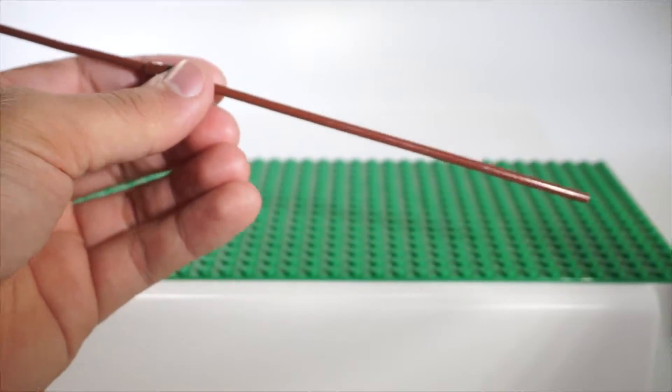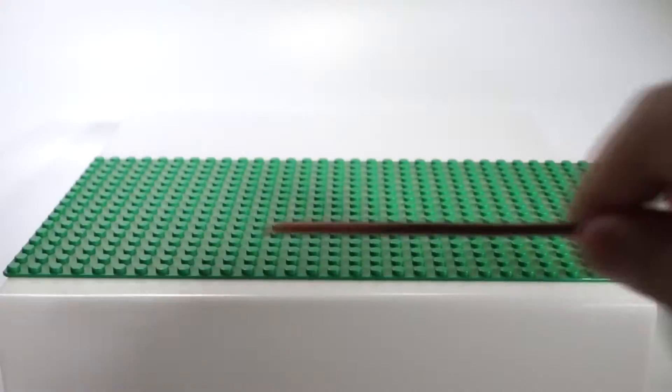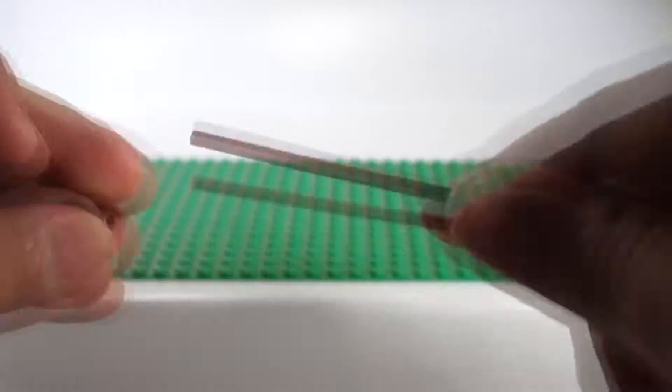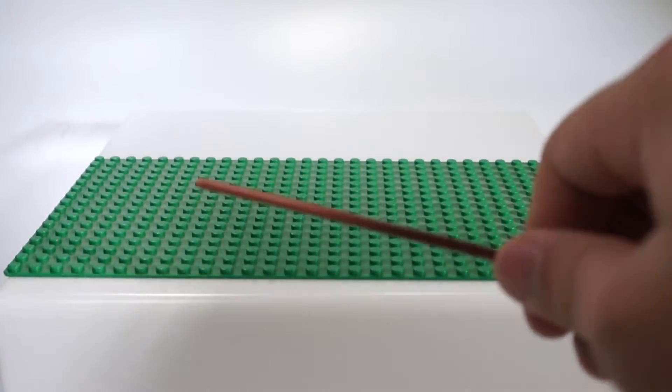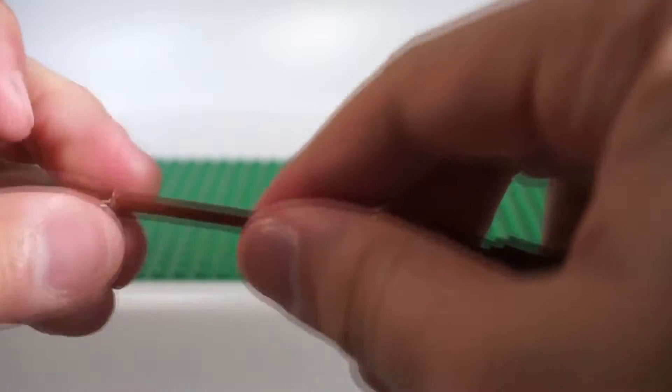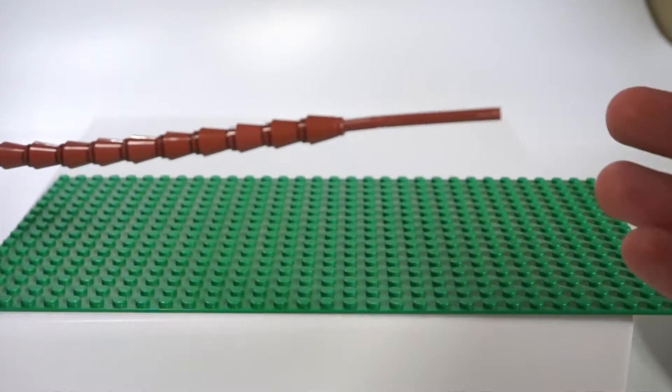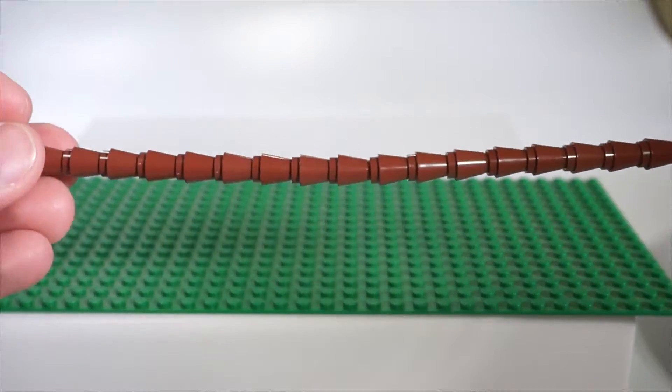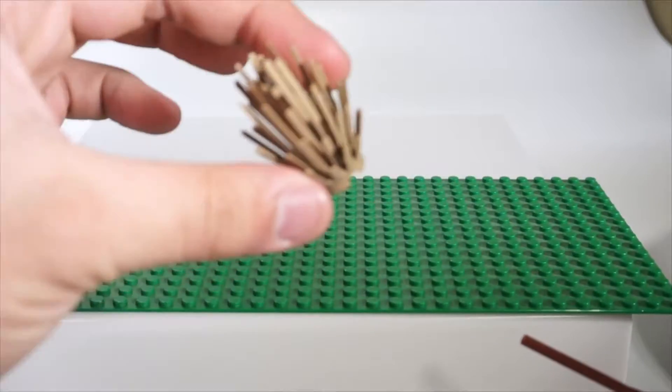You're going to want to get all the cones and repeat that process. When you're done putting all the cones, it should look a little bit like this, again leaving about a quarter of the hose left.